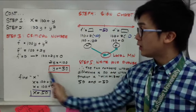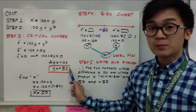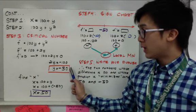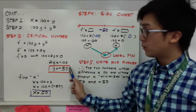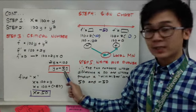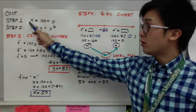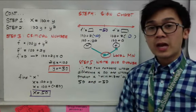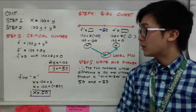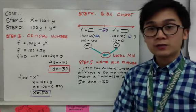This critical number is what we will use in our sign chart later on to prove if it's maximized or minimized. But before we do that, we can readily solve for the second number because we already have y equals negative 50. If we use step number one, we'll be able to solve for the value of x. Here, x is equal to 50. So now we're able to find the two numbers that we are looking for, negative 50 and positive 50.